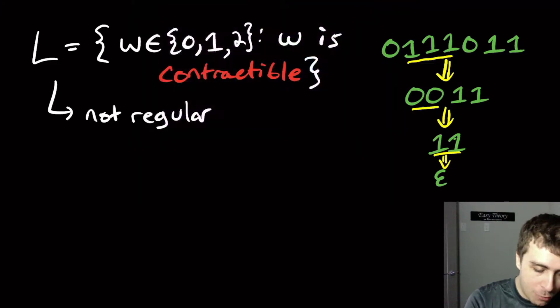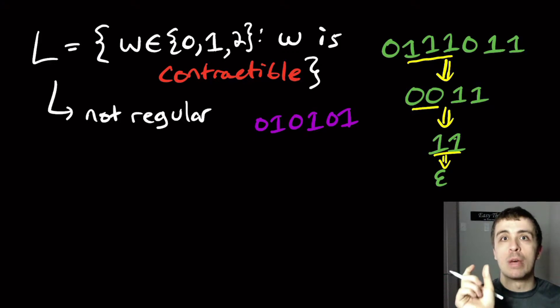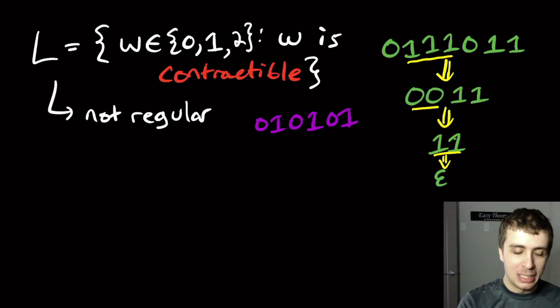On the other hand, if we have the string 01010101, for example, then there is no maximal substring with two or more of the same character in a row, because it alternates here. So this string is not contractible, and this one is. So here we're asking, we have zeros, ones, and twos. The two is important here. Where the string is contractible, I want to show that it's not regular. And the way that you prove this is actually pretty nice. It's actually pretty slick.